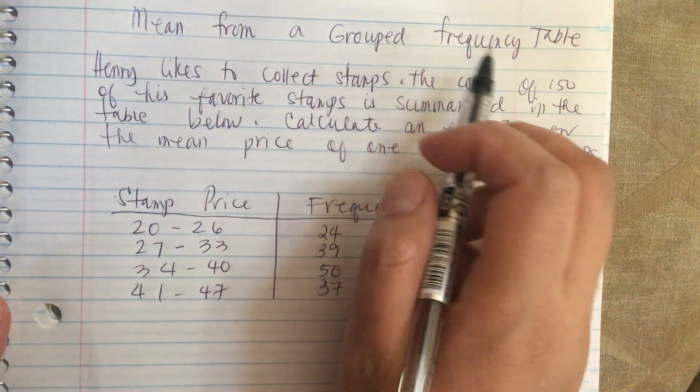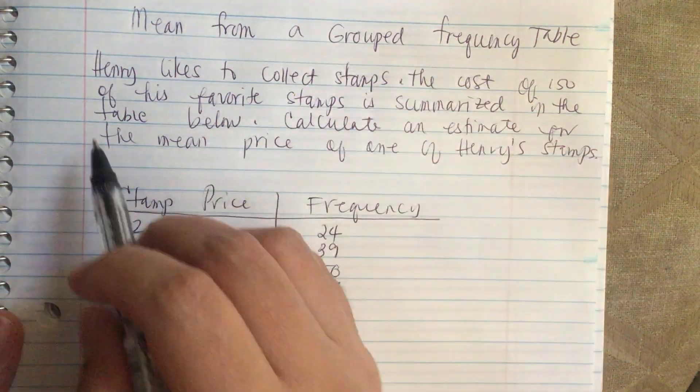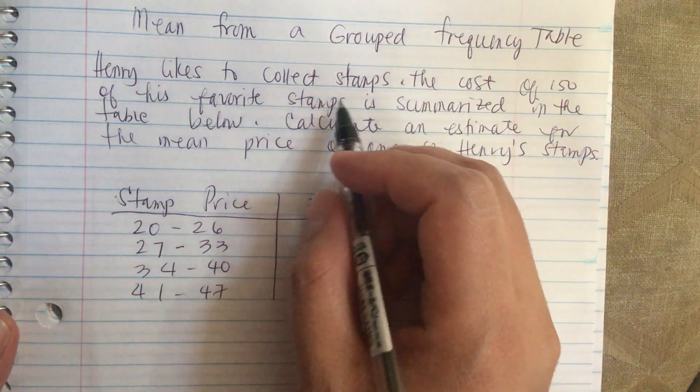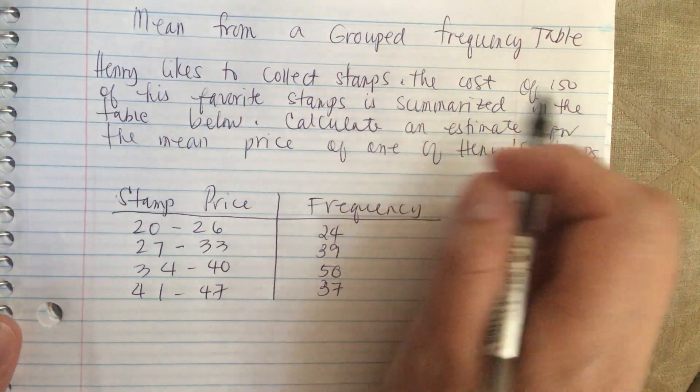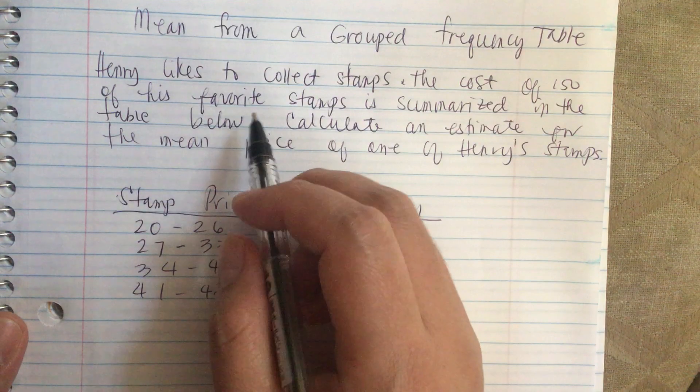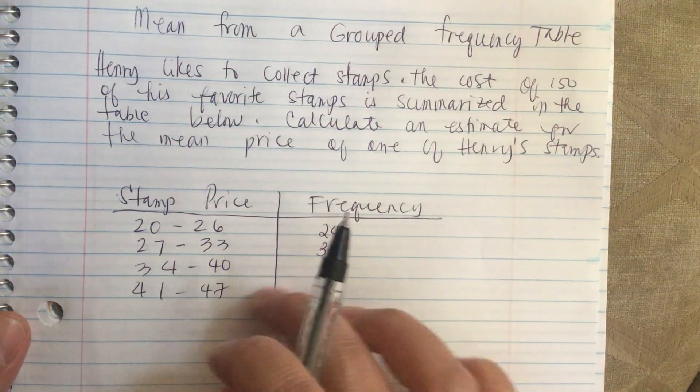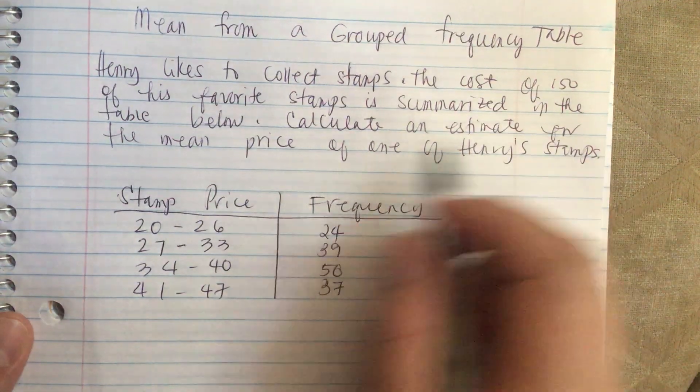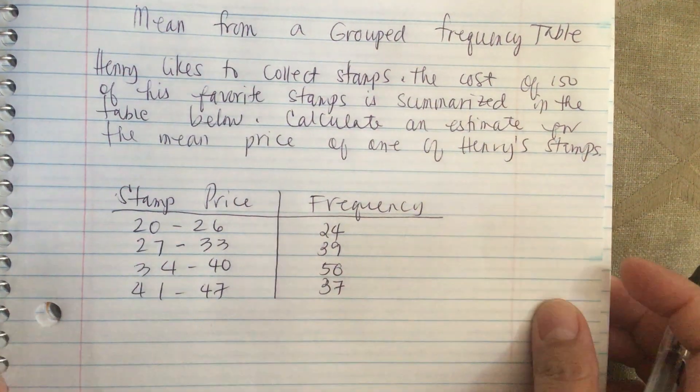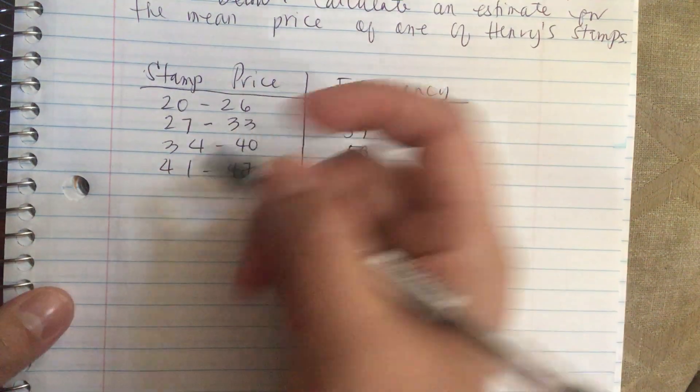Mean from a grouped frequency table. Henry likes to collect stamps. The cost of 150 of his favorite stamps is summarized in the table below. Calculate an estimate for the mean price of one of Henry's stamps.